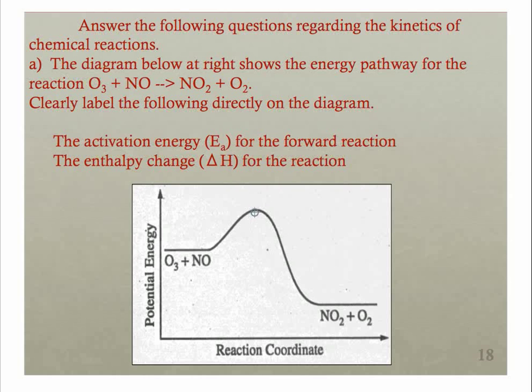For the forward reaction we're going to start with the energy of our activated complex and then subtract the energy of our reactants, and that would be our activation energy in our forward direction. So if you were given values you would calculate that. This is our activated complex or transition state, and then we would subtract the energy of our reactants. Remember it's always final minus initial.